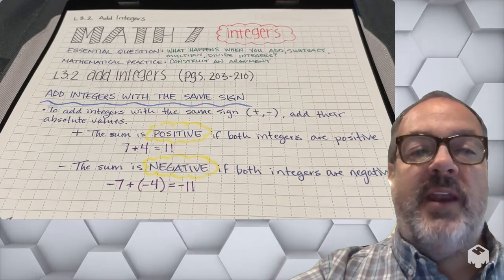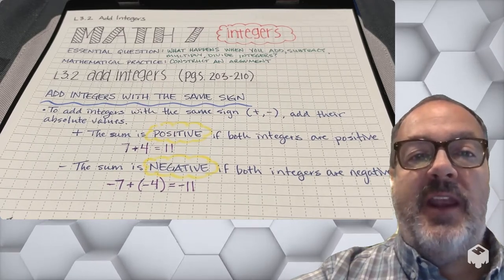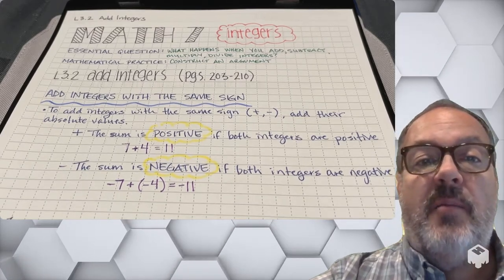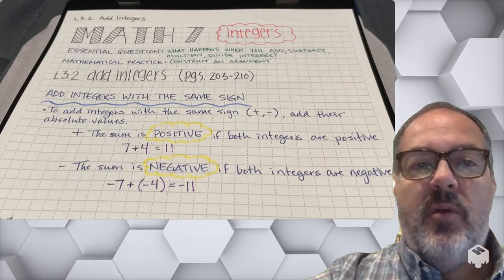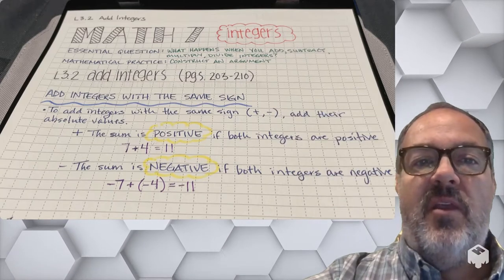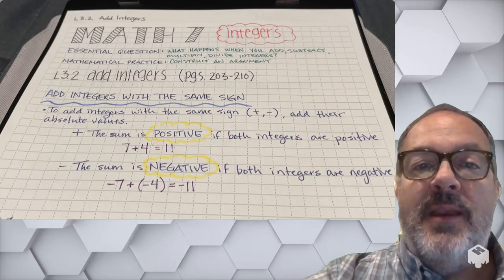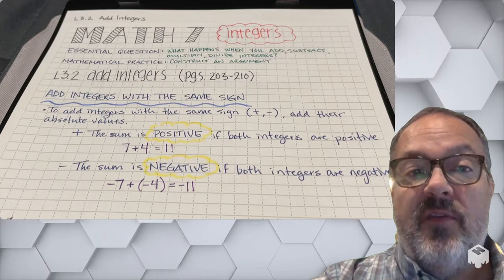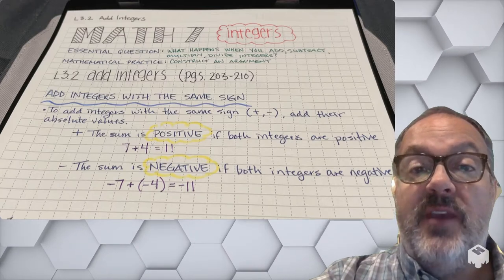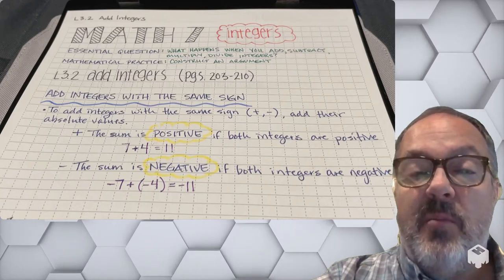Lesson 3.2, Adding Integers, on pages 203 to 210. We're going to start off by adding integers with the same sign. If both integers are positive, the sum is going to be positive — for example, 7 plus 4 equals 11. Now, if both integers are negative, the sum is going to be negative as well. So negative 7 plus negative 4 gives us a larger negative number, or negative 11.